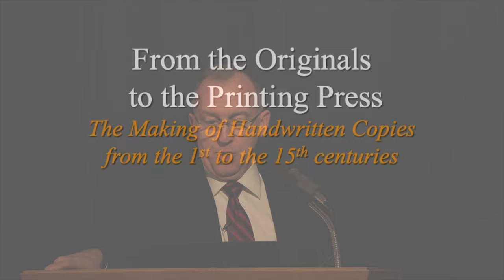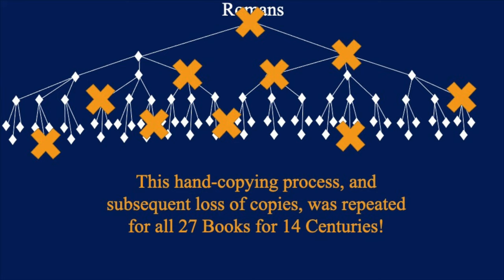We're going to consider the time frame from the originals all the way up to the printing press — about 1,500 years. This is a basic sketch of what we know happened, based on the copies that remain. We're looking at the making of handwritten copies from the 1st to the 15th centuries. Take the book of Romans: this orange dot represents the one Paul wrote. It was sent off to Rome, then copied. Those copies were copied, and more were copied after that. Not all were made from the original — especially with time. As centuries unfolded, many copies disappeared, and most importantly, the original disappeared.